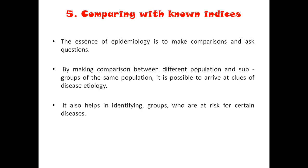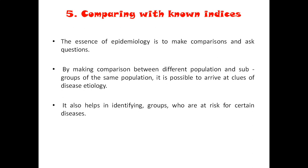The fifth step is comparing with non-indices. Once you get the data, we need to compare with other populations where the same problem has happened. We need to compare with other populations and subgroups of the same population. Ultimately, we get an idea of the disease etiology after comparing. Once we get the idea of disease etiology, we need to formulate a hypothesis.